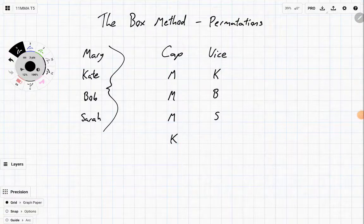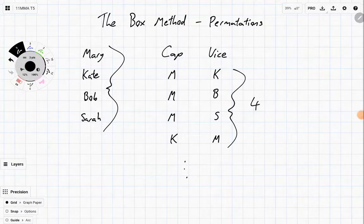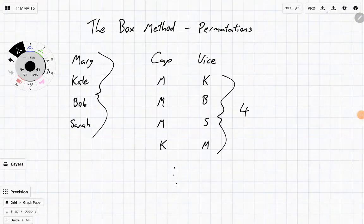We could have had Kate as the captain and then Mary as the vice. So you can see very quickly that the counting process takes a while. We've only shown the first four different options. There's got to be a faster way of working it out. And that's where the box method comes in.